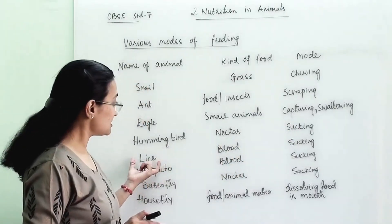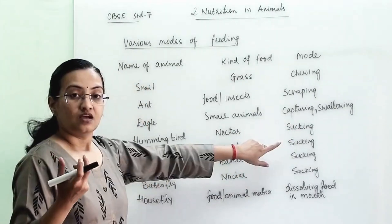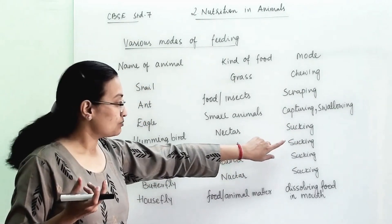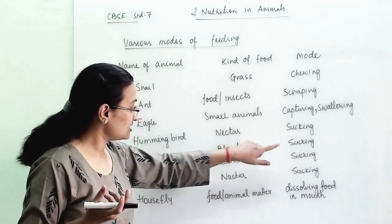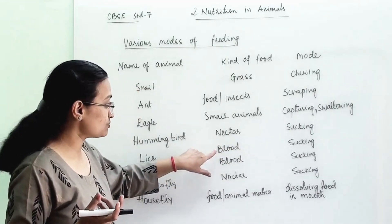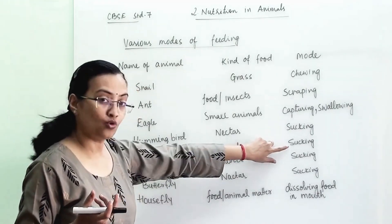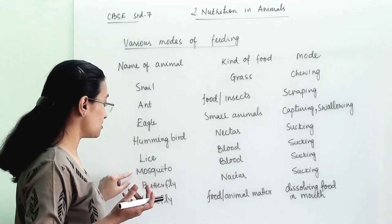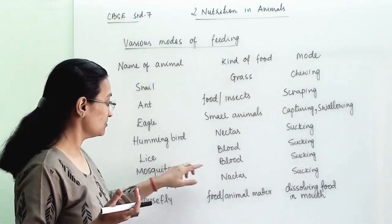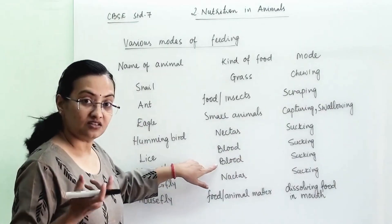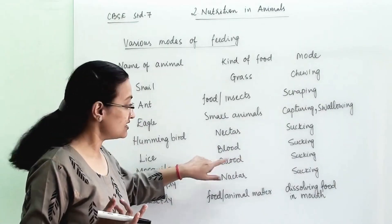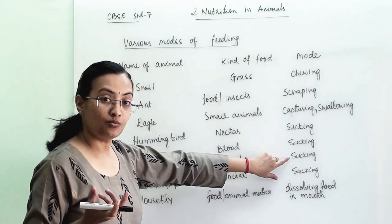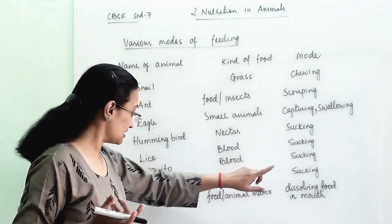Then comes lice. From the skull they are sucking blood, so the food is blood and the mode of feeding is sucking. Then comes mosquito — their food is also blood and the mode of feeding is sucking.